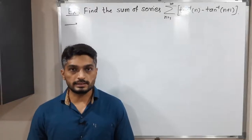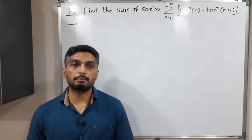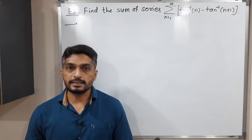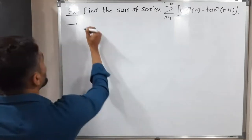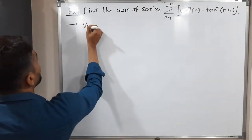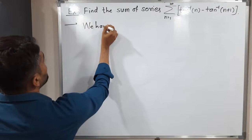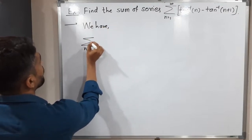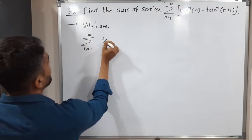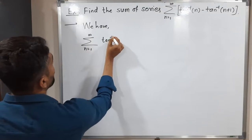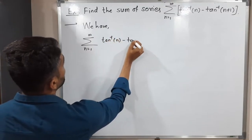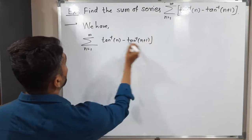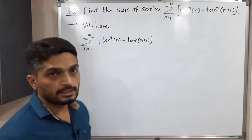Everyone, let us discuss this example. In this example, we have this series and we have to find its sum. Let us write the given series. We have summation n running from 1 to infinity of tan inverse of n minus tan inverse of n plus 1. We have to find the sum of this series.